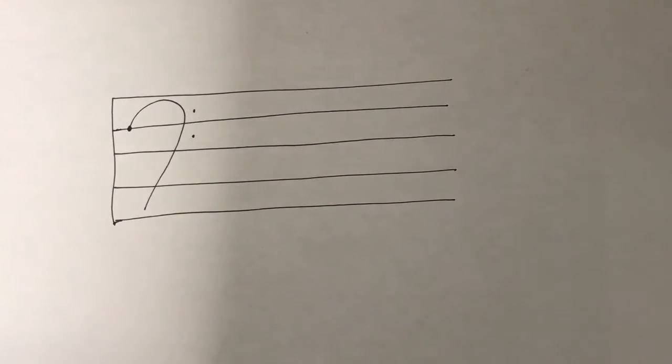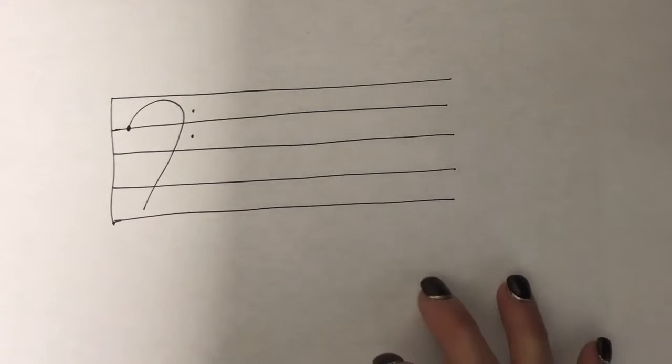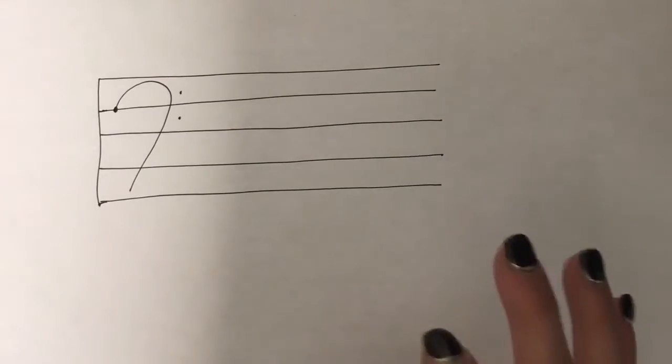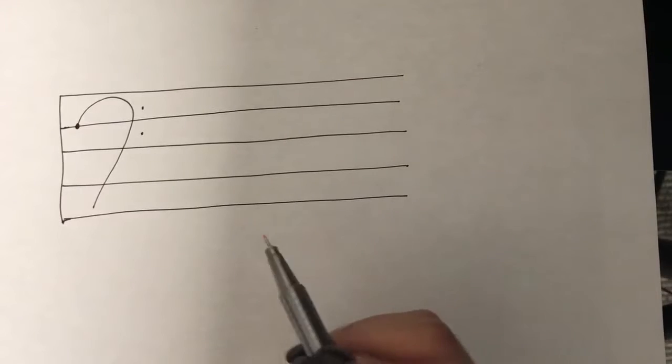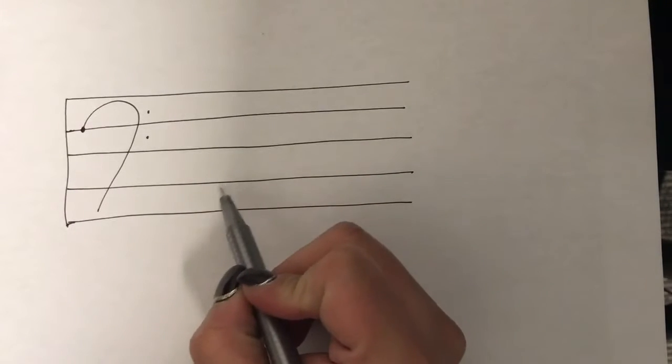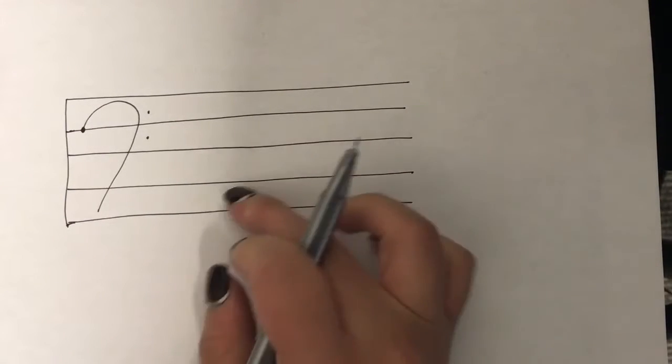Unlike treble clef, there's always ways to remember the names of the notes for treble clef and bass clef. For bass clef it's a little bit different. The things that are the same is that there are four spaces and five lines, always.